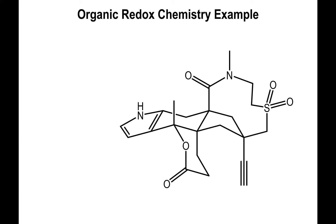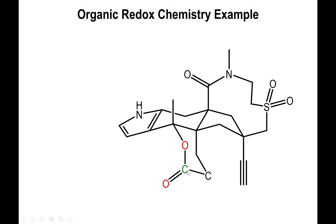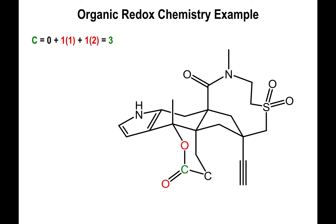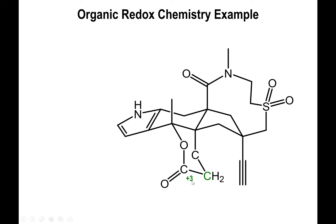Now let's apply this to our example. The first carbon already has four bonds: three of them are to oxygen atoms and one is to another carbon. The C–C bond contributes no charge, so we ignore it. The three bonds to oxygen each contribute +1, giving this carbon a charge of +3. Next, looking at another carbon bound to two other carbons — and since it only has two bonds used, it must also have two hydrogens — those two C–H bonds decrease the charge by two units. The C–C bonds are ignored, so this carbon has a −2 charge.